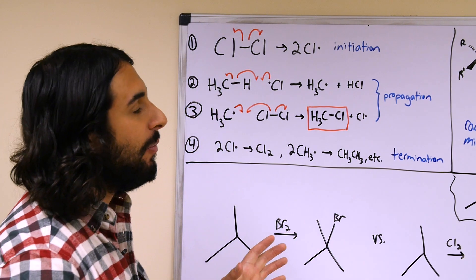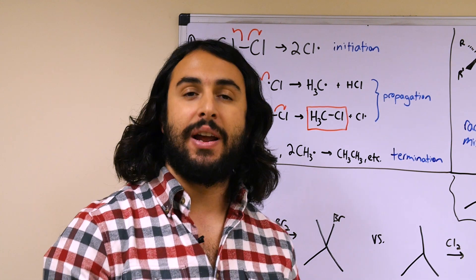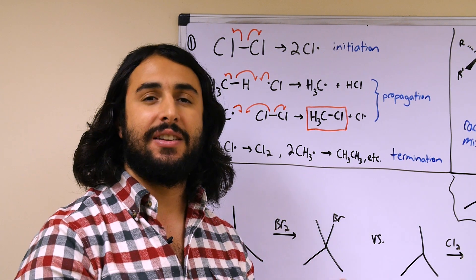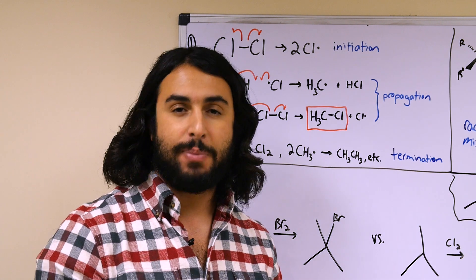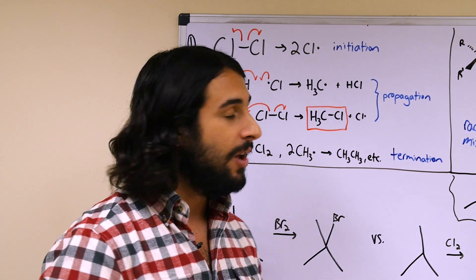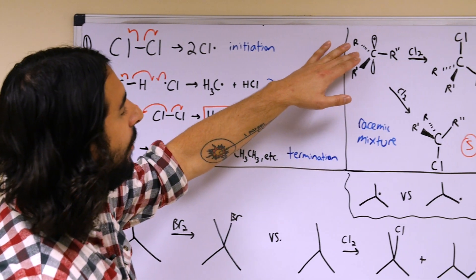Another thing that we got to understand about these radical mechanisms: remember when we were looking at an SN1 reaction where we had the sp2 hybridized trigonal planar carbocation intermediate, we had to be aware of the possibility for a racemic mixture because when you have a planar situation like this.